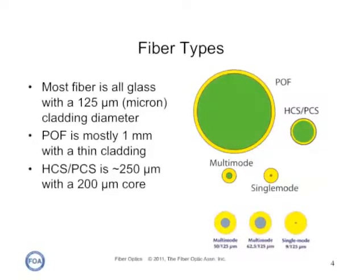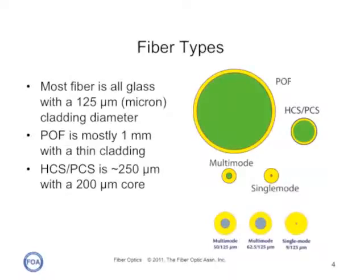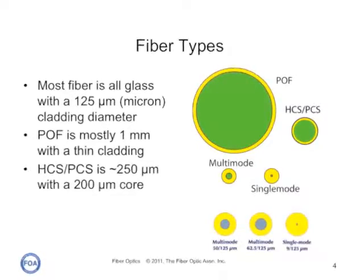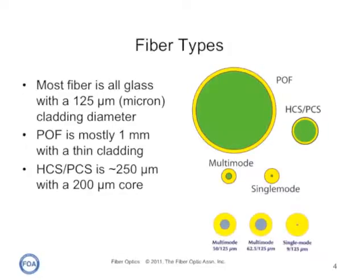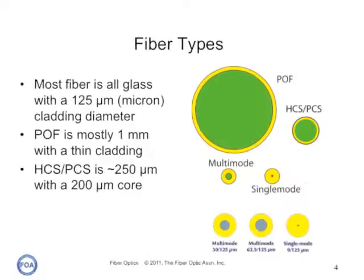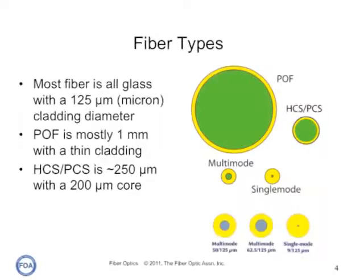The step index fiber we're going to use has a very large core, about 12 millimeters, and is typical with plastic optical fiber. It has a large core and a relatively thin cladding, which makes it very easy to demonstrate total internal reflection on this particular fiber. Let's look at what happens.